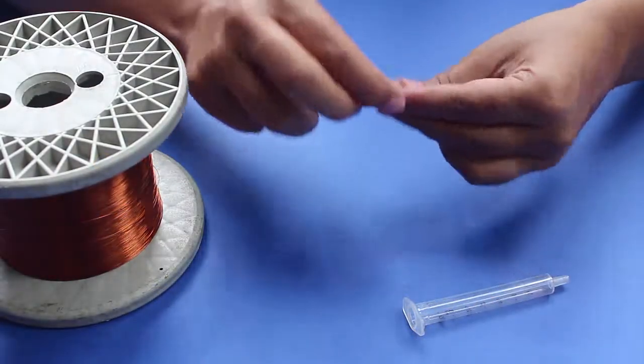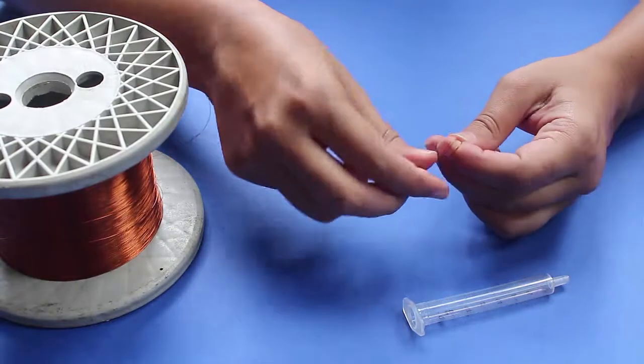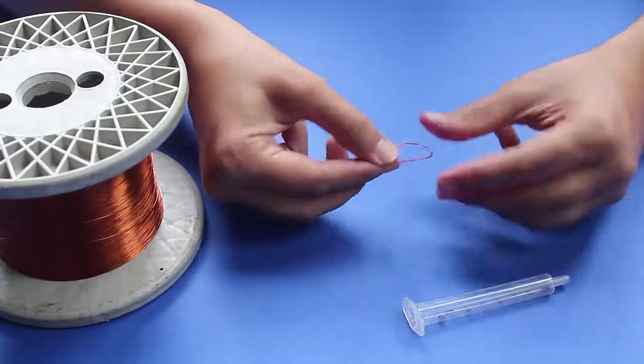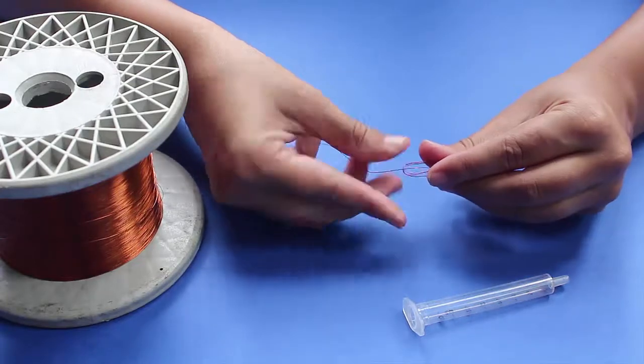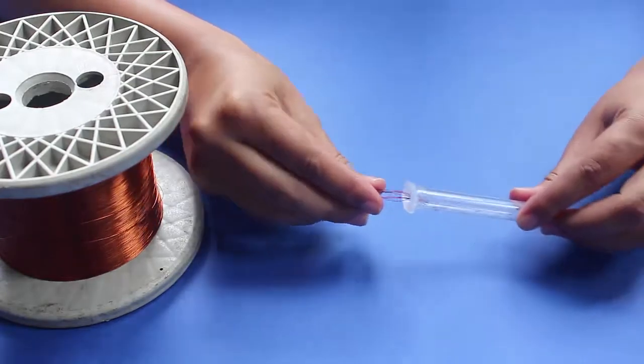First take the copper wire and wind a bit of it around your fingers. Now tuck the wound part inside the syringe like this.